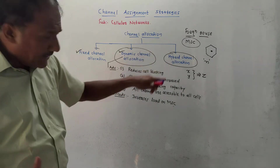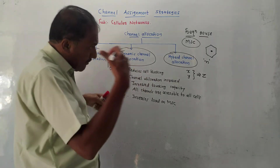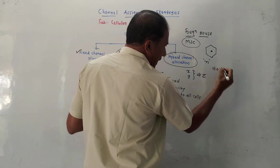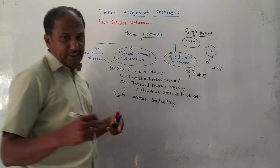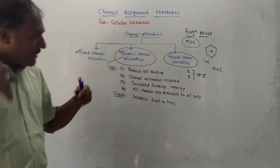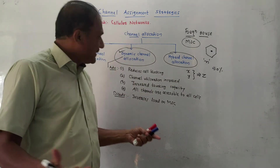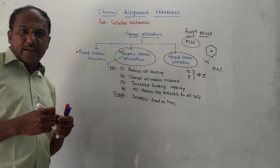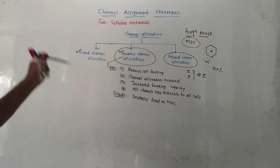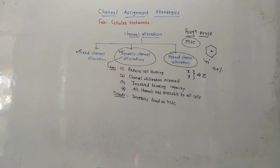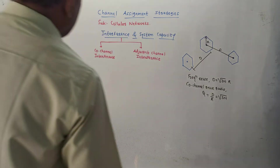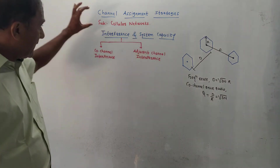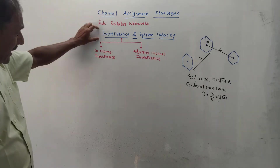In hybrid channel allocation, better performance is achieved when the load is up to 50 percent. If the load exceeds 50 percent, fixed channel allocation performs better compared to the hybrid method. These are the three different channel allocation techniques.